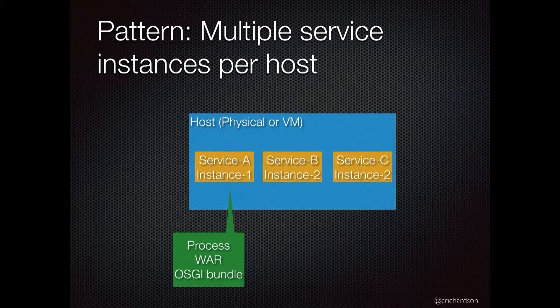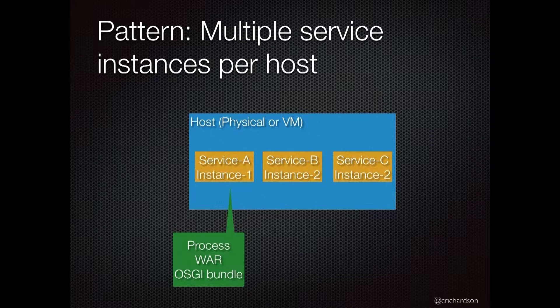The service instances themselves could each be a process — for example, a JVM or a Tomcat instance. Another option is running multiple service instances within one process. For example, each service instance could be a WAR file, and you run multiple WAR files on one Tomcat. You could also use OSGi, where each service instance is an OSGi bundle running on one OSGi container.